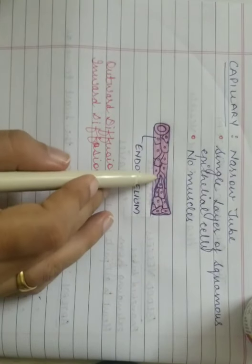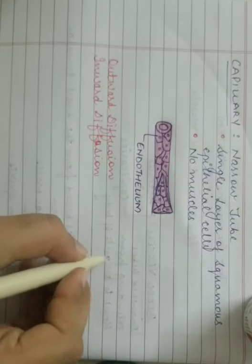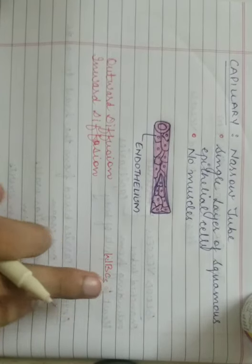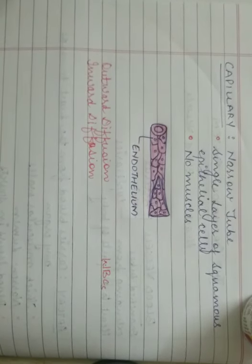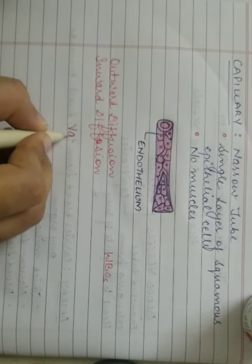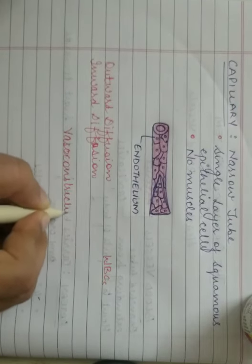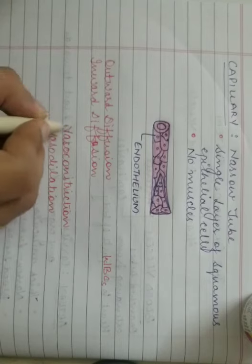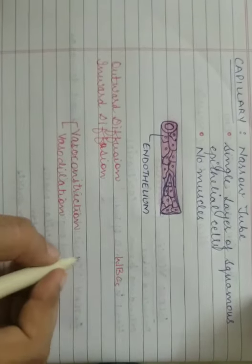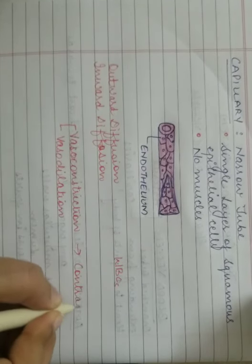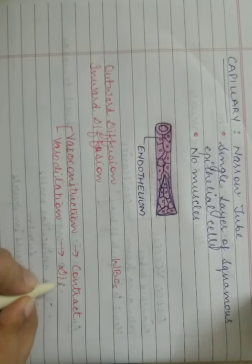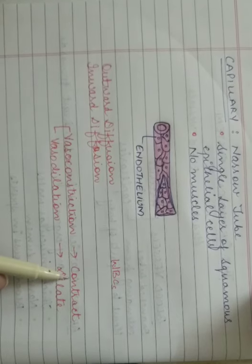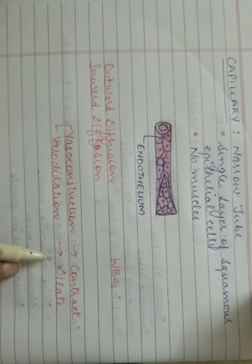Through the capillary walls, leukocytes — or white blood cells — squeeze out by amoeboid movement, also known as diapedesis. There are also two important terms: vasoconstriction and vasodilation. Vasoconstriction is when the blood vessels or capillaries contract. Vasodilation is when they dilate. When the capillaries dilate, they increase the blood flow. When they contract, they decrease the blood flow or blood supply to the various parts of the body.